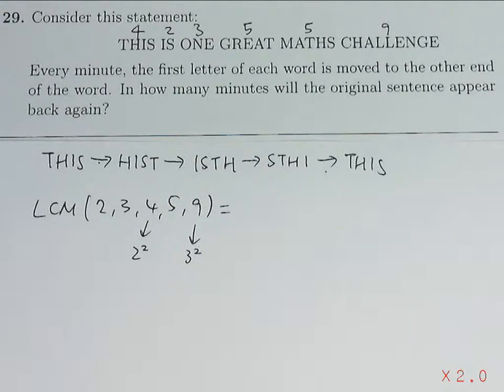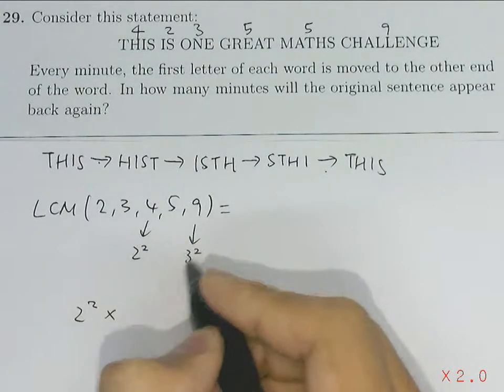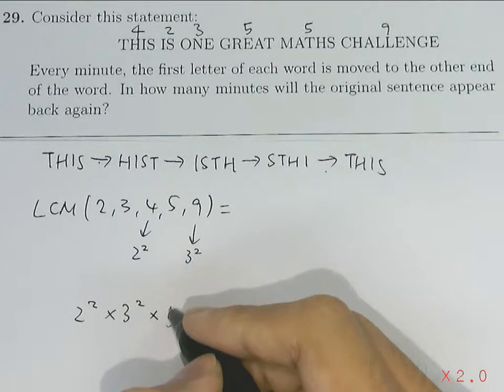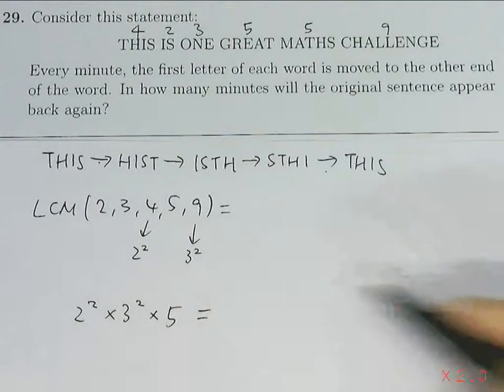So from here, we can see that the lowest common multiple will be the highest power of each prime factor. So for 2, it will be 2 squared. For 3, it will be 3 squared. For 5, it will just be 5 power 1. So this is what our LCM will be.